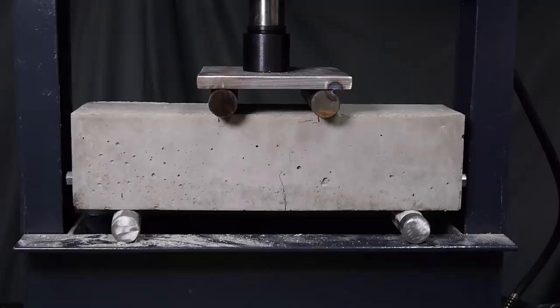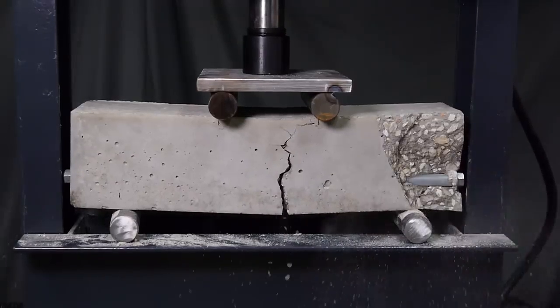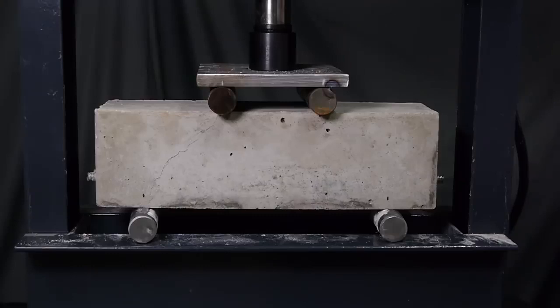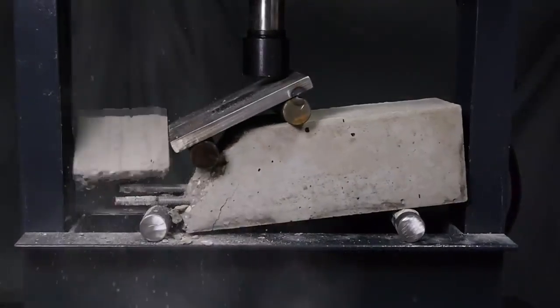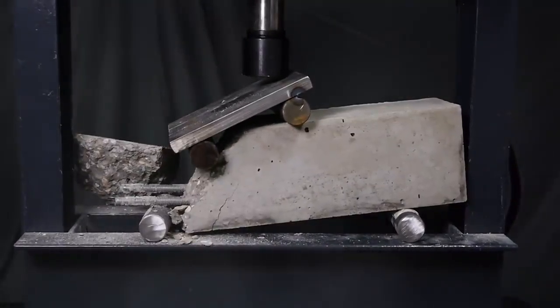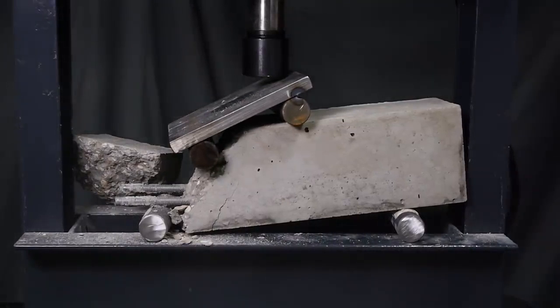It's important to point out that we didn't make these beams any stronger. Both the steel and concrete have the same strength they would without pre-stressing. But we did increase the serviceability of the member by reducing the amount of deflection under load. Of course, none of these examples actually failed because of the reinforcement, and that wasn't the point of this demo, but it's still fun to test everything to failure.